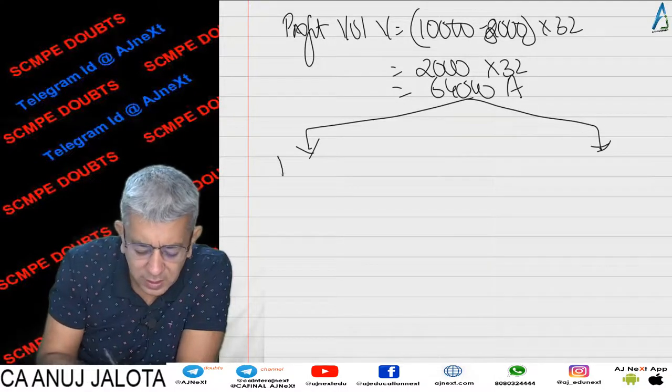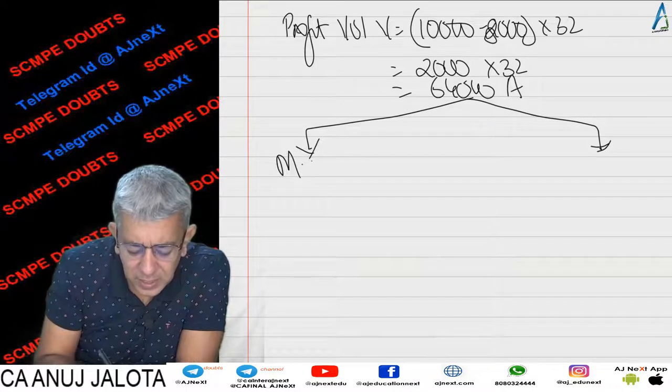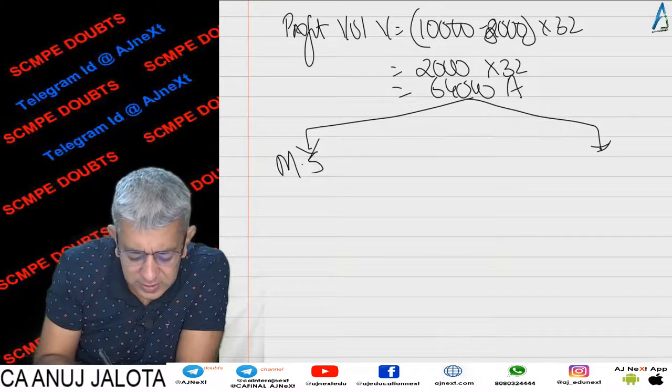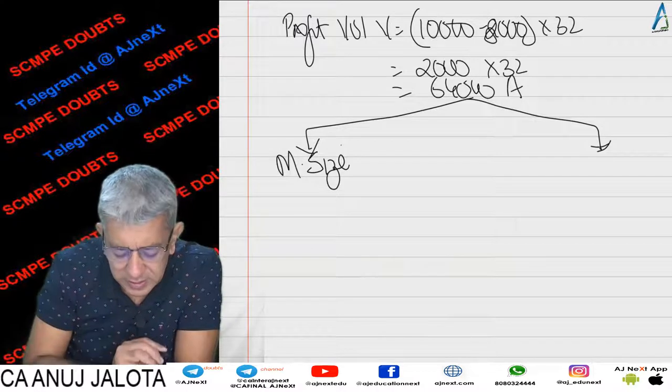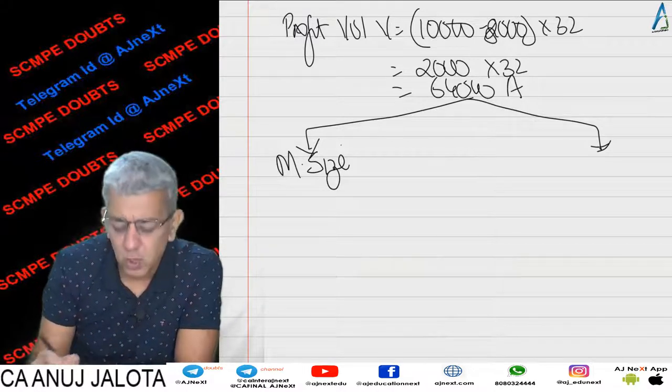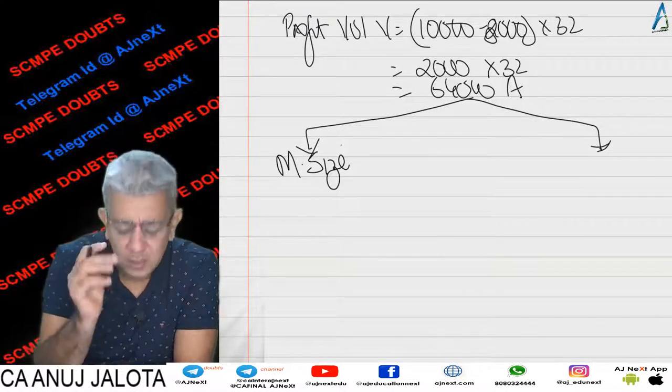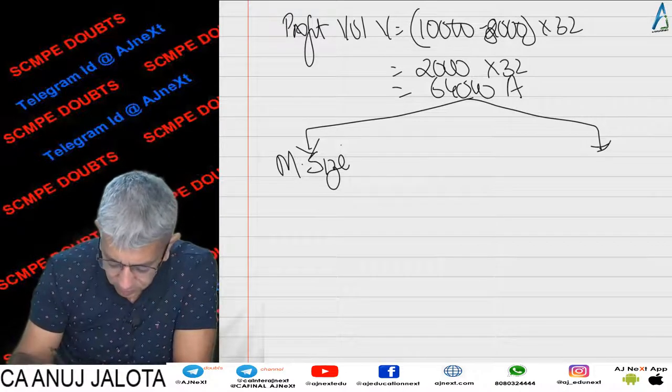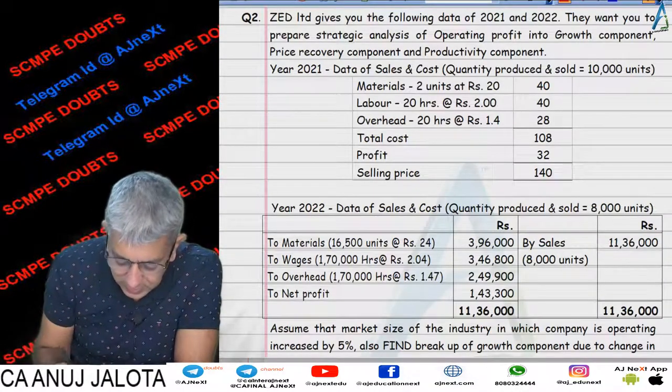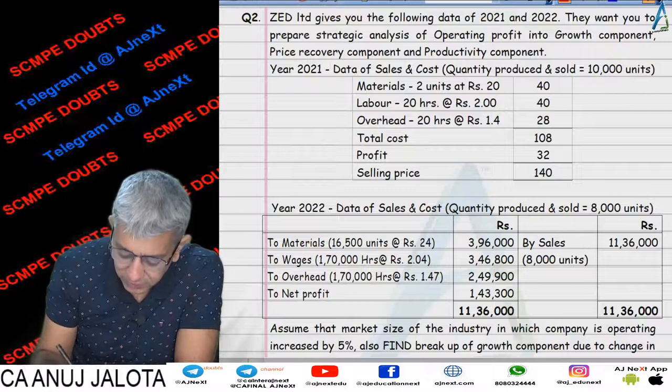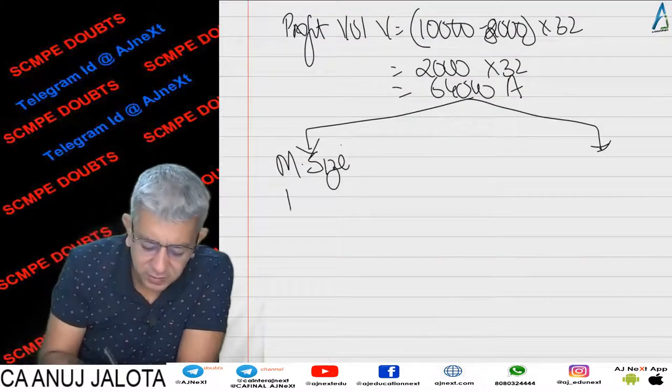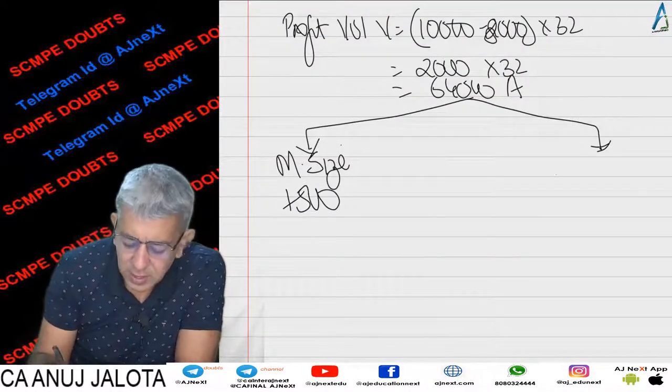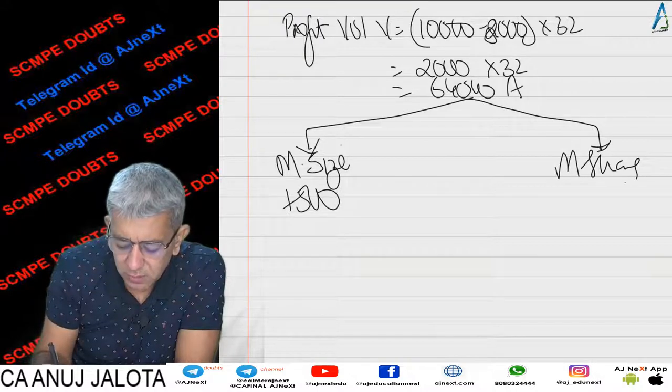due to market size, we have sold more or less number of units. Let me see - market size has increased by 5%, so therefore we have sold 500 more units. So therefore, due to market share,